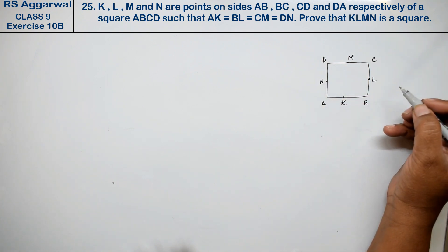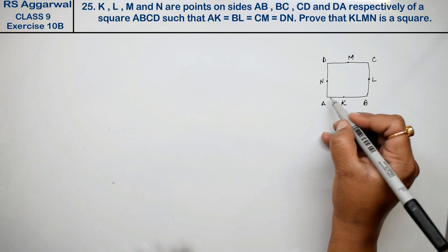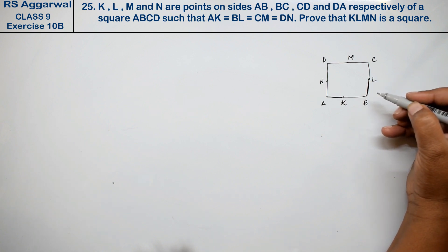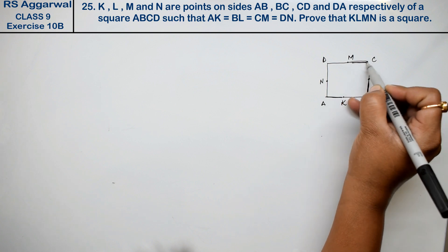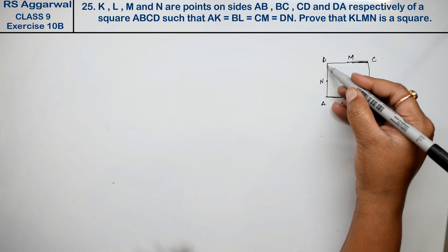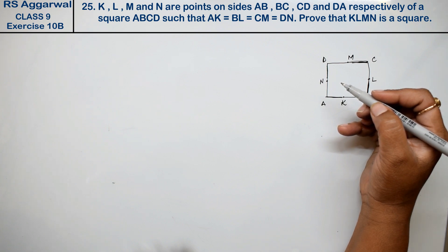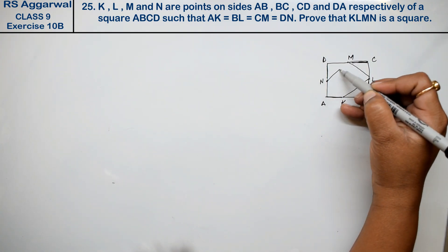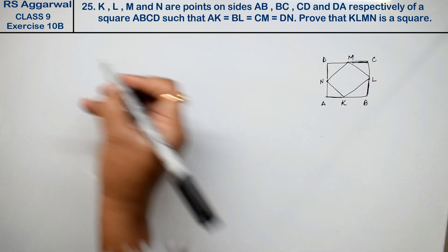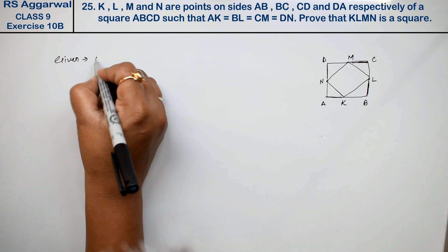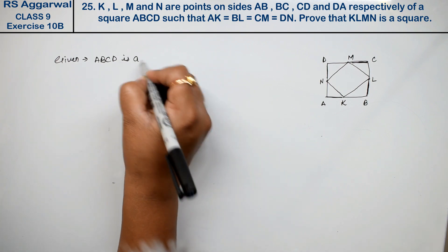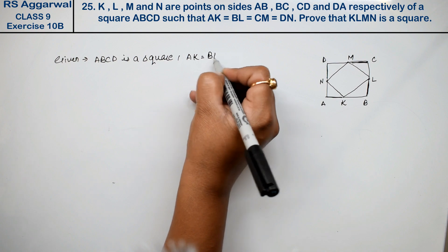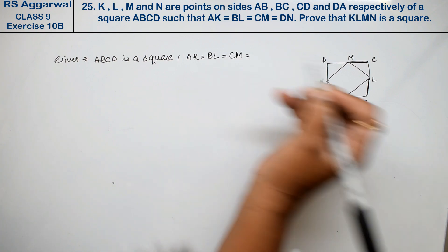Now what is it saying? Such that AK equals BL, BL equals CM, and CM equals DN. Given: ABCD is a square, and AK equal to BL equal to CM equal to DN.